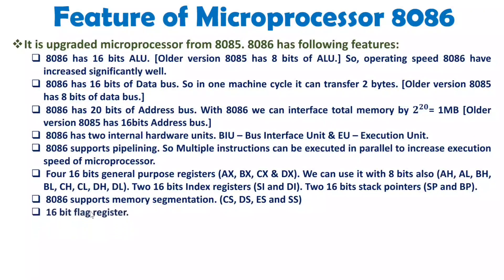When we talk about the flag register, with 8085 we had an 8-bit flag register. But with 8086 we now have a 16-bit flag register. There are a few more flags additionally added in 8086, including status flags as well as control flags. Control flags were not there with 8085 — they are newly added with 8086.